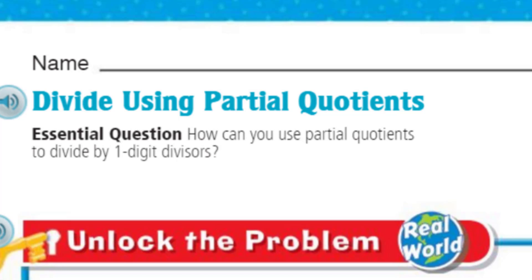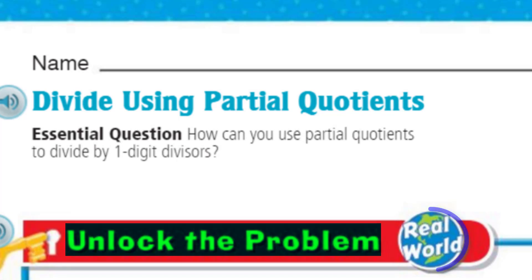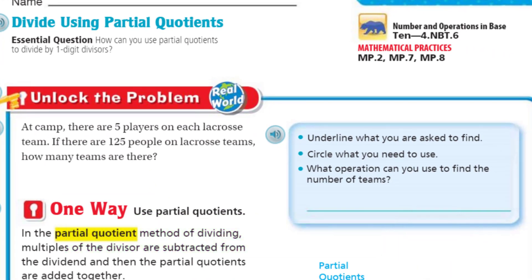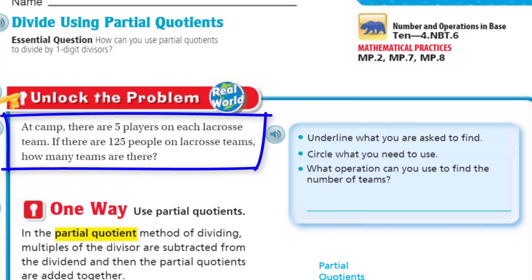My crew was telling me that we can't go any further in this lesson. We have to stop right here — unless we unlock the problem. Because it's real world, baby. Real world. At camp, it says there are five players on each lacrosse team. If there are 125 people on lacrosse teams, how many teams are there? What a great question.